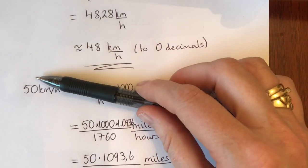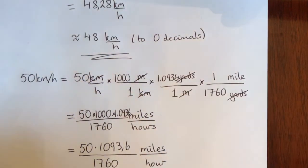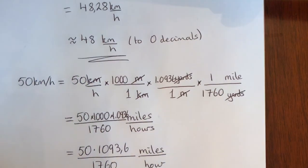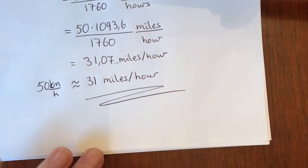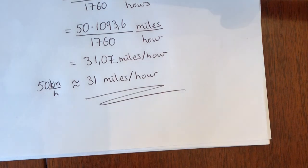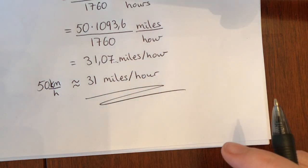When doing 50 kilometers per hour we would expect it to be slightly more than 30 miles per hour — and indeed it is. Good luck with changing units and practicing with that.